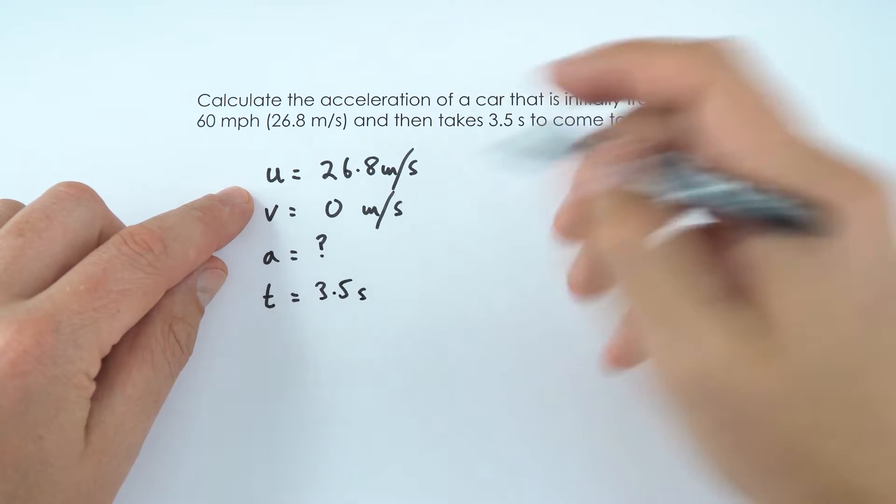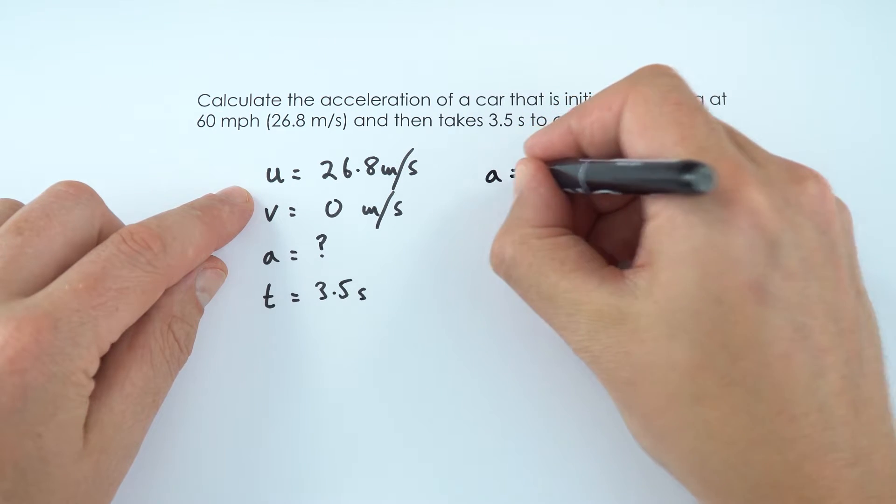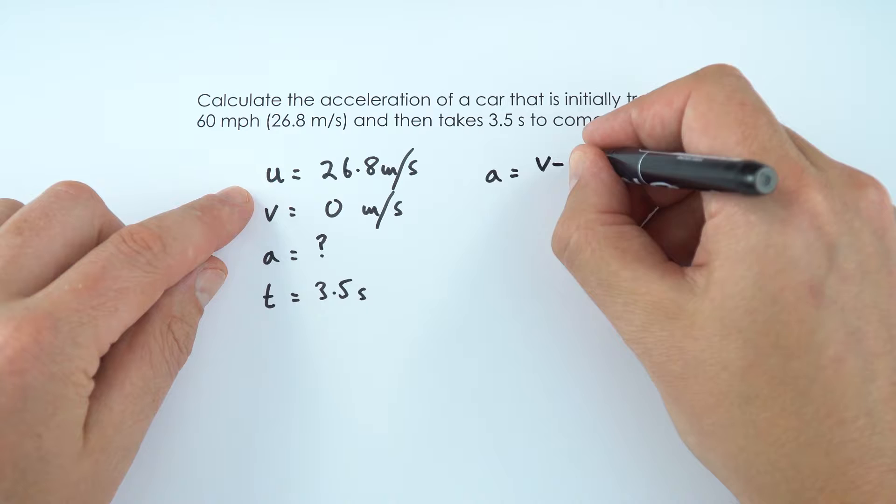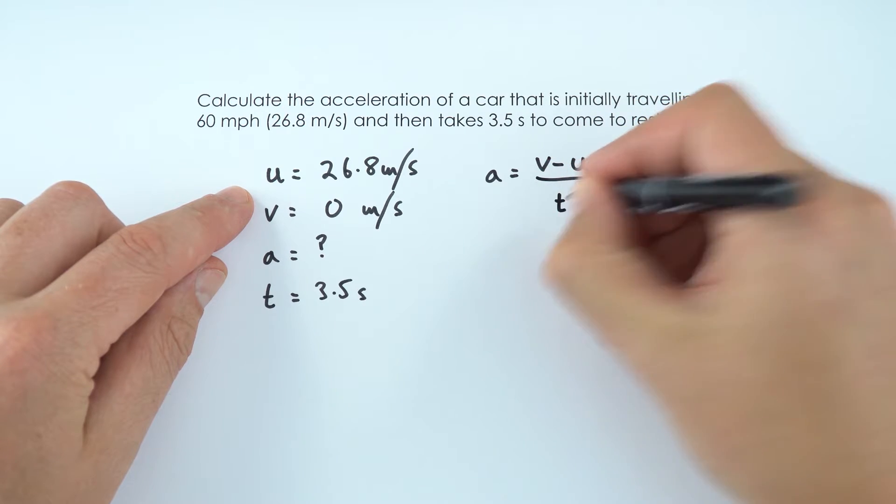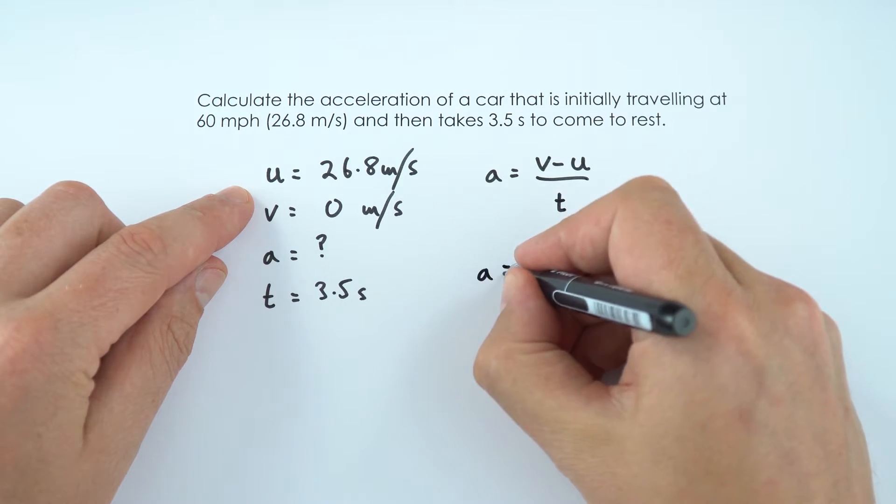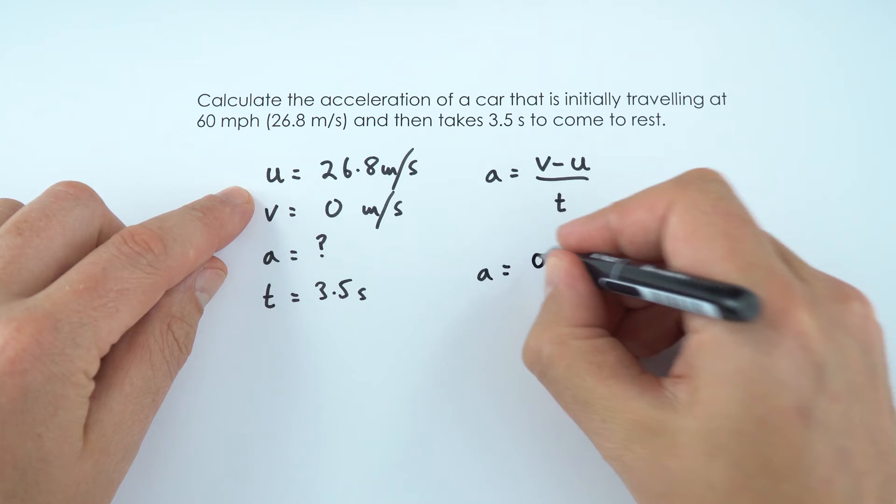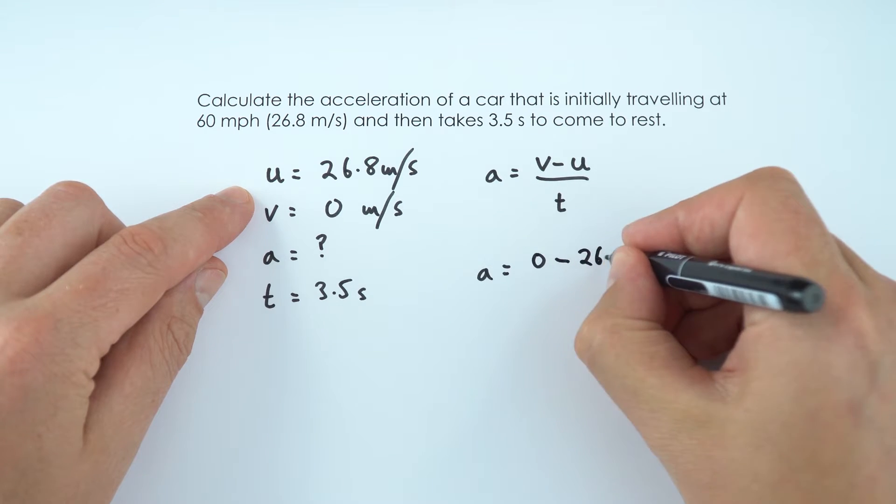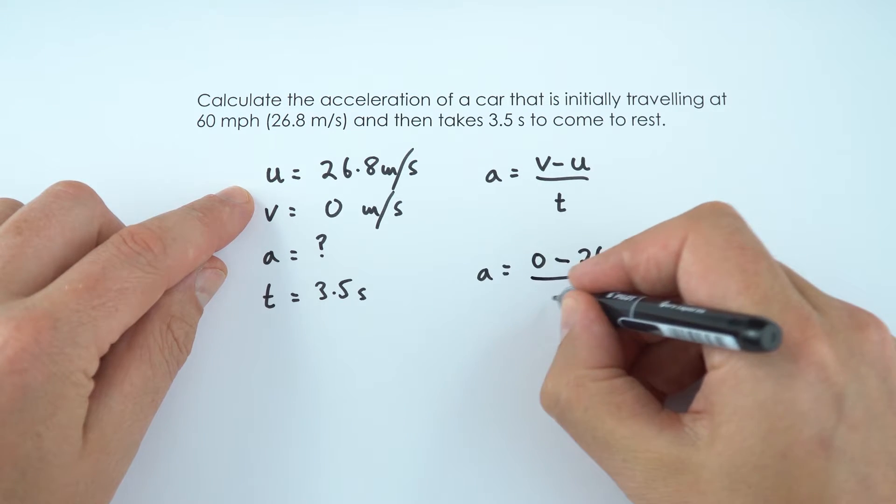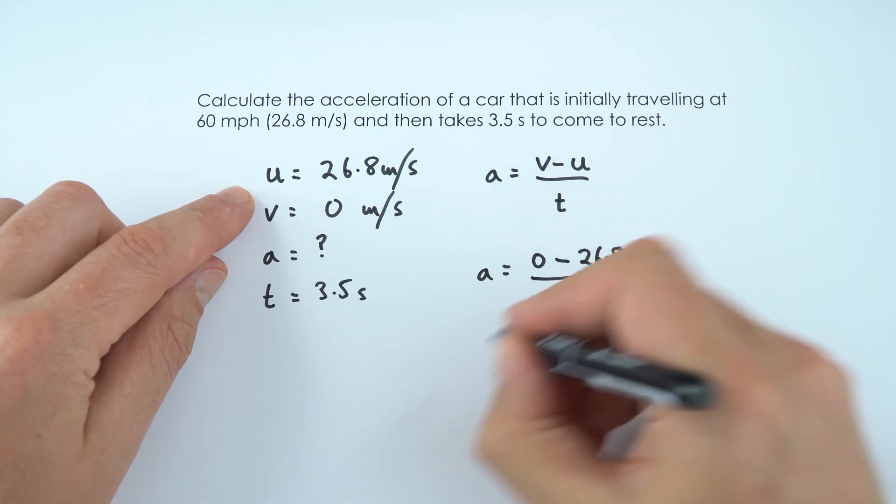So the equation I'm going to use for this is that the acceleration is equal to the change in velocity, v minus u, divided by t. That means the acceleration is going to be equal to v, which is 0, take away 26.8, and we divide that by 3.5.